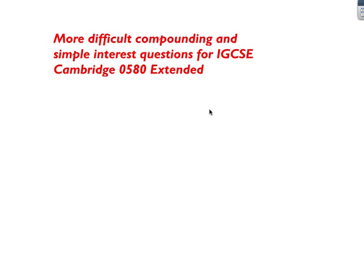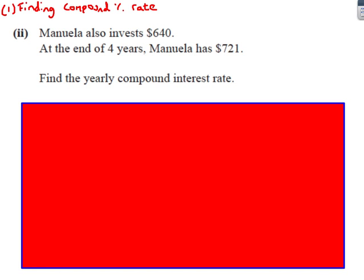Okay, so I'm going to have a look at a few questions to do with compounding and simple interest. This is already assuming that you've done quite a bit on compound and simple, and these are kind of the more difficult questions for the GCSE Cambridge extended paper. Okay, so question number one, something like this, where you have to find the compound percentage rate.